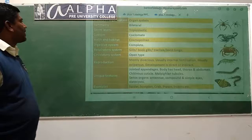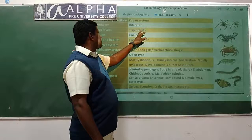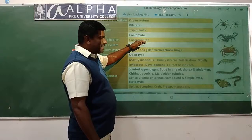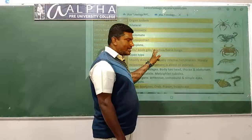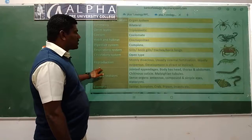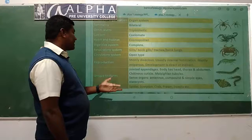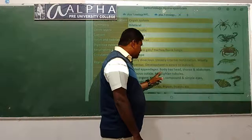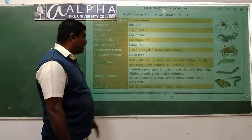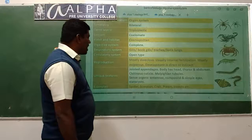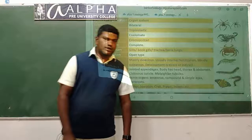Characteristics at a glance: organ system level organization, bilaterally symmetrical, triploblastic, coelomate, cosmopolitan in nature. Complete digestive system. Respiratory system by gills, book gills, trachea, and book lungs. Circulatory system is open type. Sexual reproduction, internal fertilization, direct and indirect development. Unique features: jointed appendages, body with head, thorax, and abdomen, covered by chitinous exoskeleton, Malpighian tubules as excretory organ, sensory organs - antennae, compound and simple eyes. Examples: spider, scorpion, crab, prawn, and many insects.